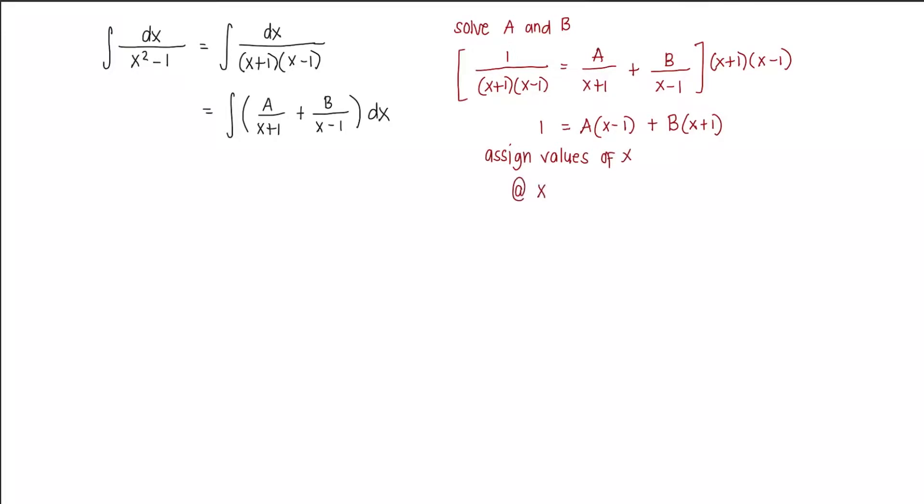So at x equals... what value of x here will make this expression 0? Obviously, it's 1. So at x equals 1, we substitute 1 equals a times 1 minus 1 plus b times 1 plus 1. Then we totally cancel this out. So what's left would be 1 equals 2b. Therefore, b is equal to 1 half.